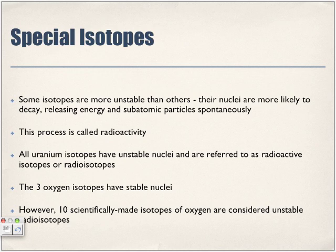This process is called radioactivity. And any type of isotope that is considered radioactive are called radioactive isotopes or radioisotopes. All uranium isotopes have unstable nuclei and are referred to as radioactive isotopes. So radioisotopes - these are the ones that are considered radioactive.